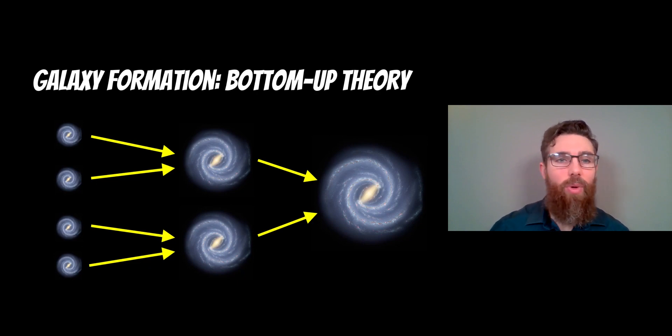Welcome to this video. In this video we're going to have a look at one of the theories for galaxy formation. There are a few different theories and this one is known as the bottom-up theory. We're going to look at how we get to large spiral galaxies and possibly the elliptical galaxies as well.